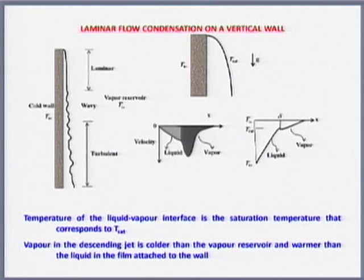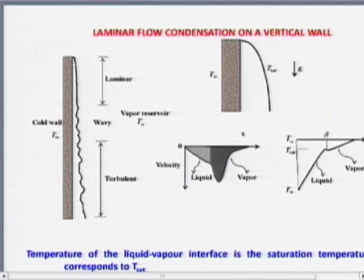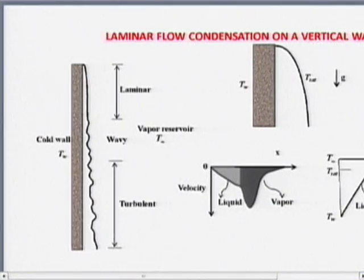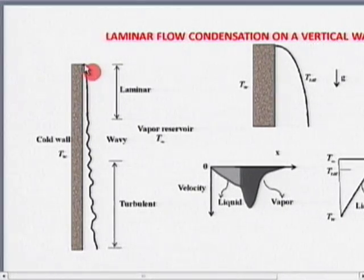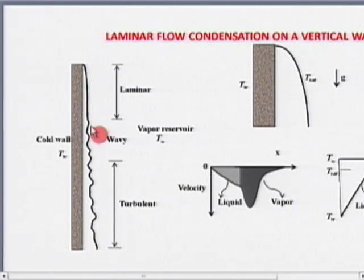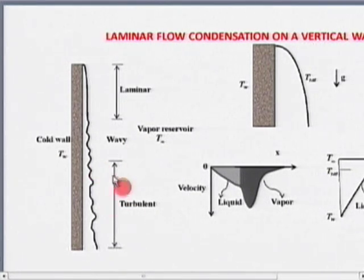With this, let us move on to something concrete: laminar film condensation on a vertical wall. I am taking a vertical wall. Unlike natural convection where the boundary layer was growing from bottom to top, notice the difference here — condensation forms from top to bottom. It is very natural because it has to fall. Initially it is laminar, subsequently it becomes wavy, and after waviness you get turbulent. So essentially again you have laminar and turbulent.